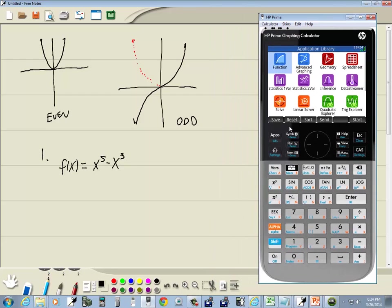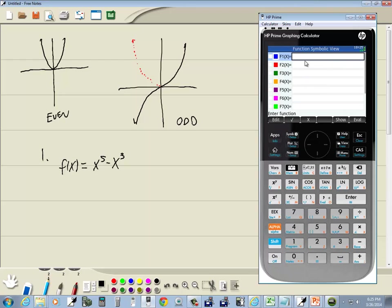I'm going to, if you're not in your apps, you can click your apps button to get here. Then you do enter on function. In our first one, we're going to put in our x to the fifth. So we'll do our x key, and then the x to the y, and then 5.